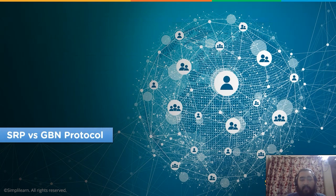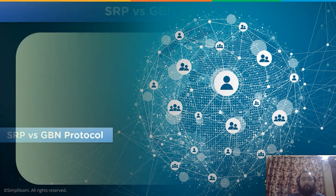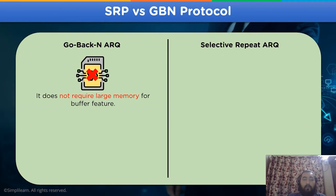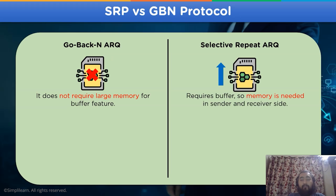The next topic is the difference between Selective Repeat ARQ protocol and Go-Back-N ARQ protocol. In Go-Back-N ARQ protocol, it does not require a large amount of memory, as it does not provide the buffer feature for the network model. Whereas in Selective Repeat ARQ protocol, a buffer system is required, so the memory needed is more on both the sender side and the receiver side.